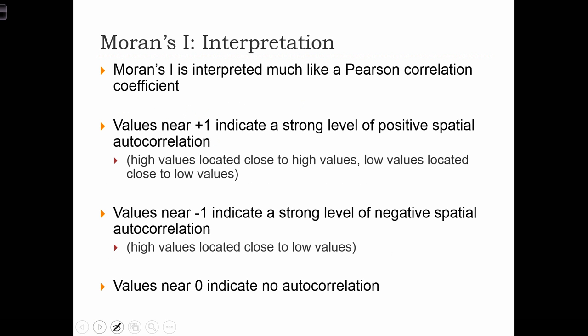So because Moran's I is standardized very similar to a correlation coefficient, we can also interpret Moran's I like a correlation coefficient. Values near positive one indicate a strong level of positive spatial autocorrelation, which means that high values are located close to other high values on the map and low values will be located close to low values. Values of Moran's I close to minus one will indicate a strong level of negative spatial autocorrelation, so high values will be located close to low values and low values close to high values.